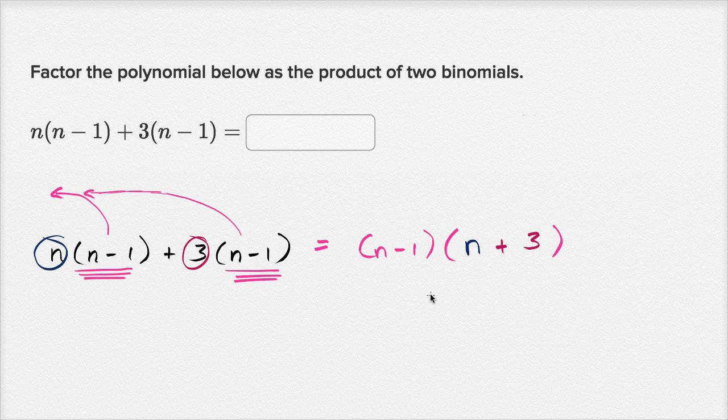And just like that, we are done. We have factored the polynomial below as a product of two binomials. So this is the same thing as n minus one times n plus three.